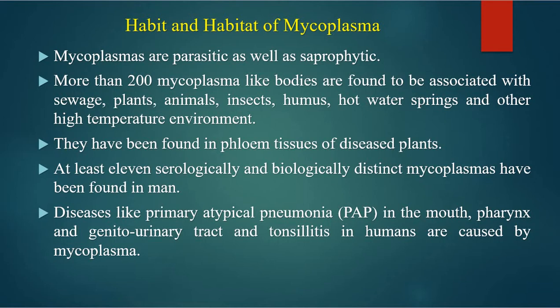Regarding habit and habitat of mycoplasma: mycoplasma are generally both parasites and saprophytes. More than 200 mycoplasma-like bodies are found to be associated with sewage, plants, animals, insects, humans, hot water springs, and other high temperature environments.